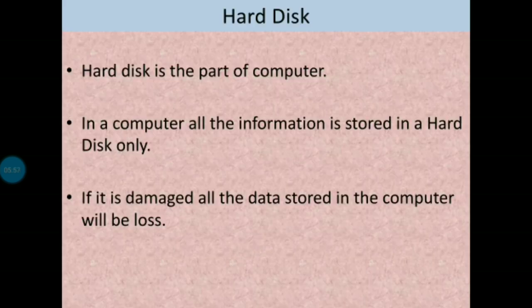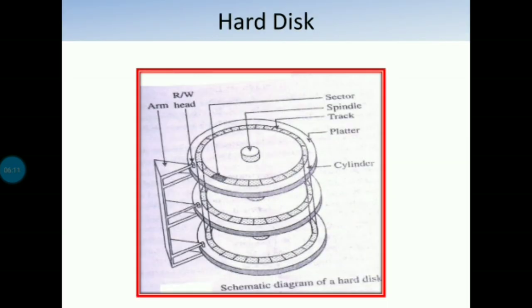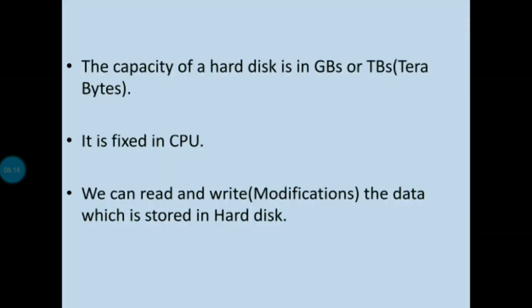Coming to hard disk. Hard disk is a part of the computer. In a computer, all the information is stored in the hard disk. If it is damaged, all the data stored in the computer will be lost. See how the hard disk looks like. The capacity of hard disk nowadays is in gigabytes or terabytes. It is fixed in the CPU. We can read and write the data stored in the hard disk — that means we can edit the information stored in the hard disk as many times as we want.